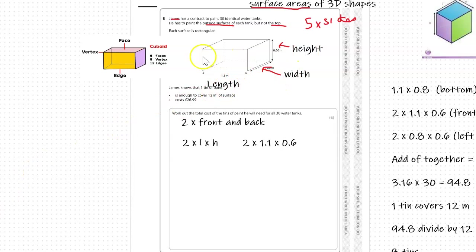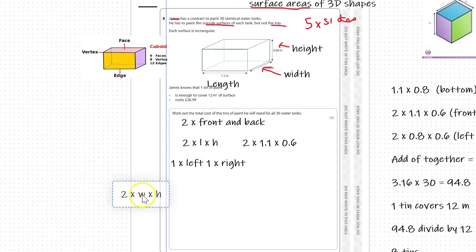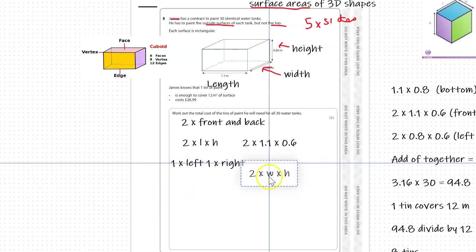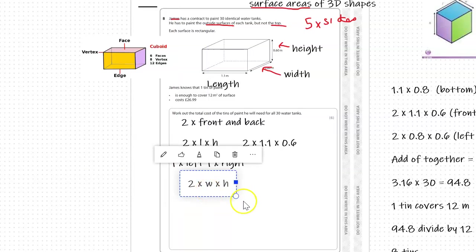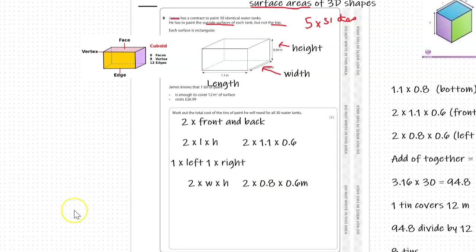Next we have to do the two ends, left and right. We've got one times left, one times right, they're exactly the same, so we can group them together. That would be 2 times width and height. The measurements associated with that is 0.8 times 0.6 meters, and there are two of them.